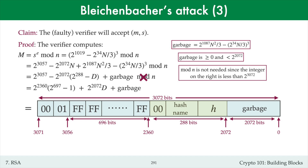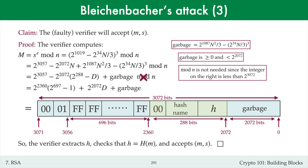So the verifier confirms that the first byte is 00, the next byte is 01. She then steps through the ff bytes until she gets to the 00 byte. She extracts the hash name from the next 15 bytes, and the hash value from the next 20 bytes. The hash value is correct, since h was chosen to be the hash of the message m. The verifier does not notice that there are garbage bytes after h, and so the verifier accepts the signed message. This proves that Bleichenbacher's attack works.